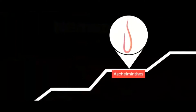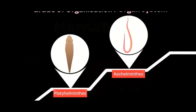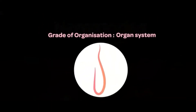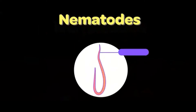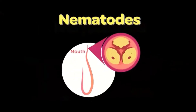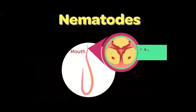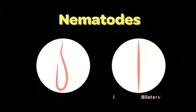These organisms are a step higher than the platyhelminthes on the scale of evolution. They have an organ-system grade of organization, meaning a few organs make up the body, and not just tissues. The body is usually cylindrical with tapering ends, and the mouth has prominent structures like suckers and hooks to attach to the host body and derive nutrition. The body is bilaterally symmetrical and can be divided into equal halves through the central axis.